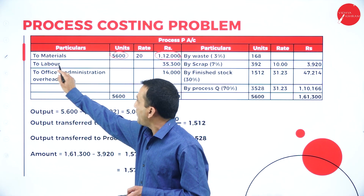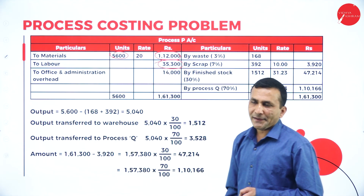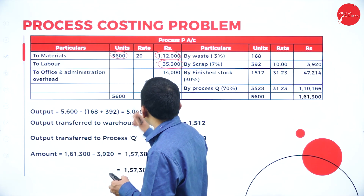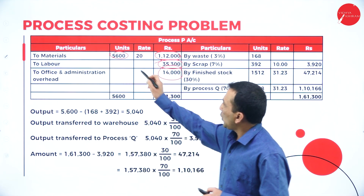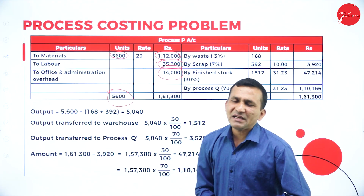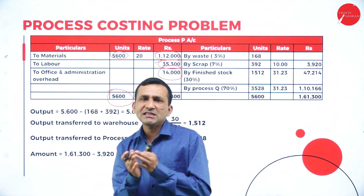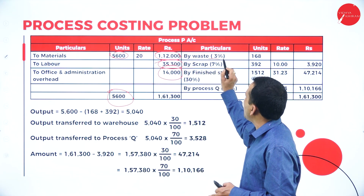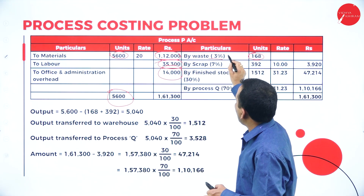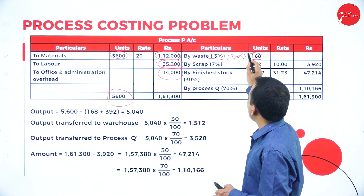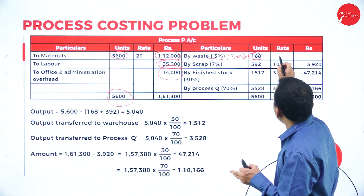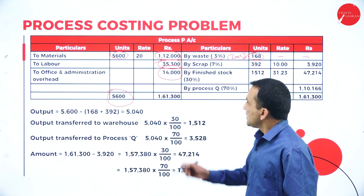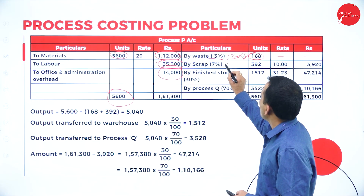Office and administration expense is ₹42,000, divided equally among three processes, giving ₹14,000 for Process P. Total units on the debit side: 5,600. Now, 3 percent is normal wastage: 5,600 × 3% = 168 units; no rate is given for normal loss, so the value is nil. For scrap, 7 percent: 5,600 × 7% = 392 units.